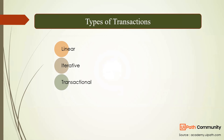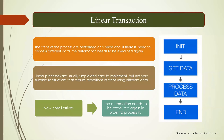A linear transaction means the steps of the process are performed only once and the automation need not be executed again. For example, one email arrives, the automation processes it, and the job is done. If I have to run it again for different data, I would have to rerun the process from Orchestrator. So in linear: initialize, get data, process data, end.